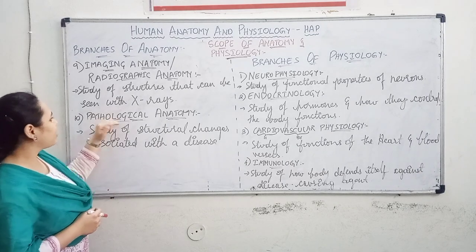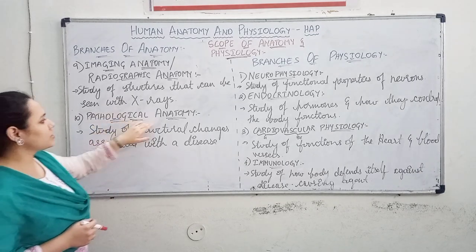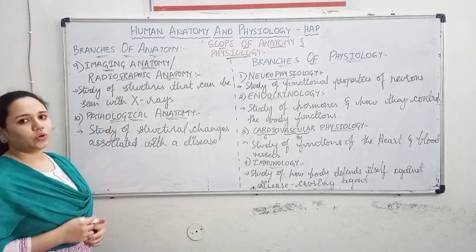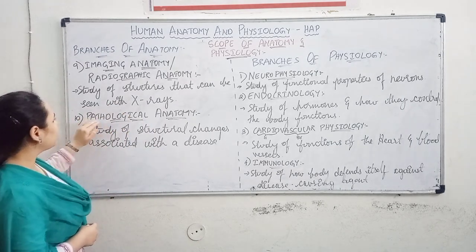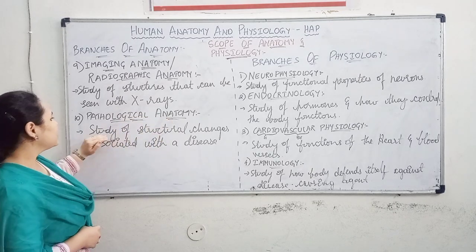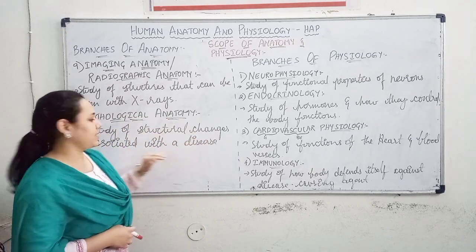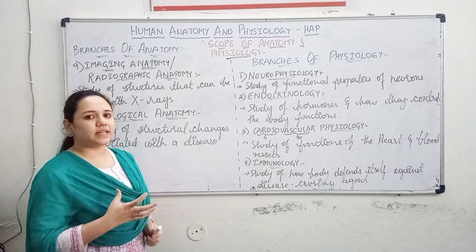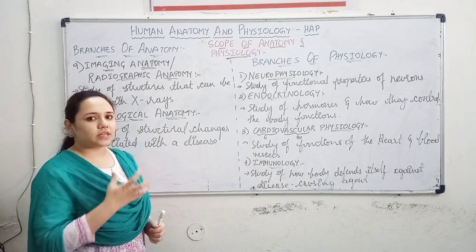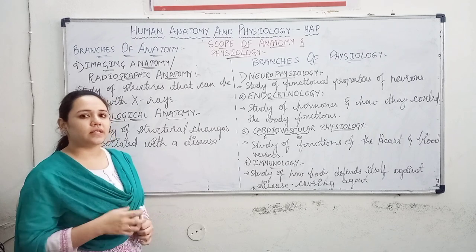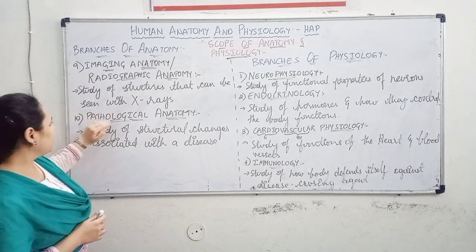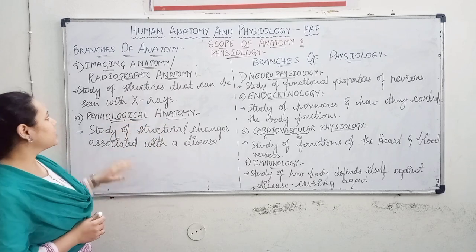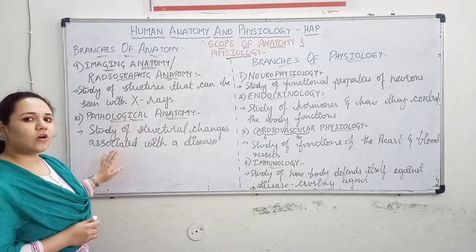The last branch is pathological anatomy. 'Pathological' means anything related to diseases. So pathological anatomy is the study of structural changes associated with a disease — what changes occur in the body's structures under a particular disease condition. That study comes under pathological anatomy.